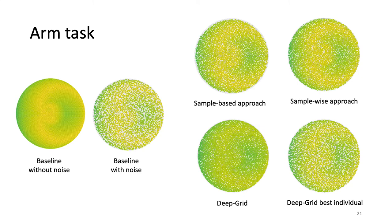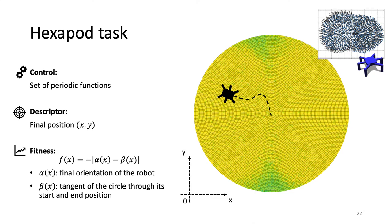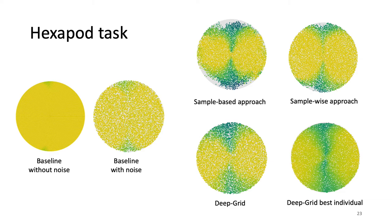We did exactly the same experiment with a simulated hexapod control task, in which the descriptor is the final position of the hexapod and you are trying to learn how to walk in every direction, so the final fitness is the orientation of the robot. We obtained the following archive. Similarly, on the left are the two baselines and on the right all approaches — again deep grid is better at finding stable solutions and handling uncertainty on the behavior descriptor.